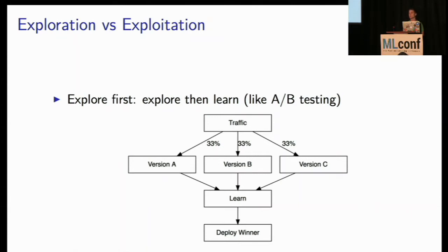So in this, there's kind of two aspects to a contextual multi-armed bandit. The first is your exploration policy, and then the second is kind of your learning policy. And so the simplest approach is to explore first. So just like A-B testing, traffic comes to your site, you send people to version A-B-C, you learn what happens when you send people to those, and then you deploy the winner after you have enough sample size.